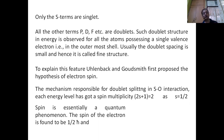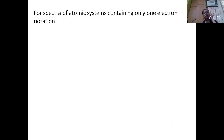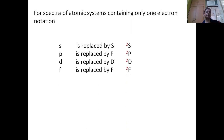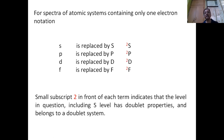Spin is essentially a quantum phenomenon. The spin of the electron is found to be one-half h-cross, and S² equals s(s+1)h-cross². For spectra of atomic systems containing one electron, the notations are: small s is replaced by capital S, small p is replaced by capital P, small d is replaced by capital D, and small f is replaced by capital F. The small subscript 2 in front of each term indicates that the level has doublet properties and belongs to a doublet system.